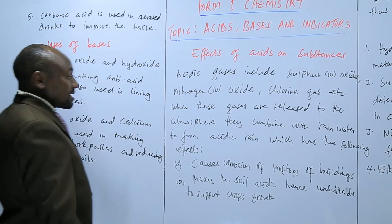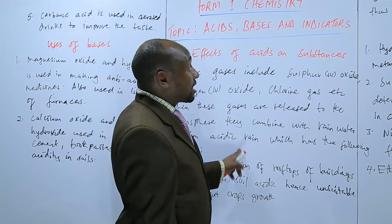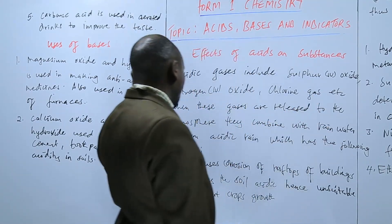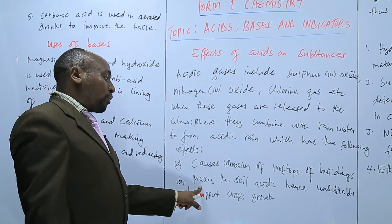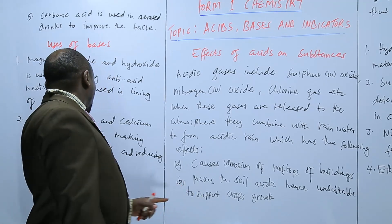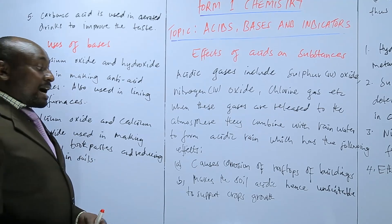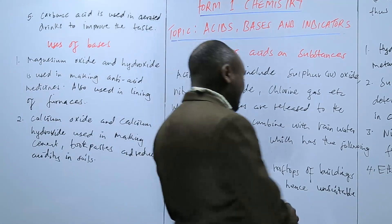And reducing acidity in soils. So the acidity that is as a result of the acidic rain, whereby the soil may become so acidic, and therefore unsuitable for crops growth. Then we are saying that calcium oxide and calcium hydroxide can be added to reduce that acidity.